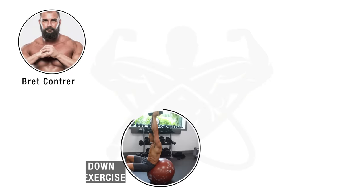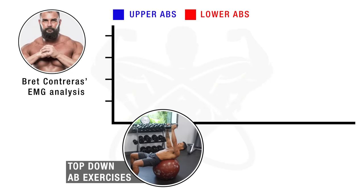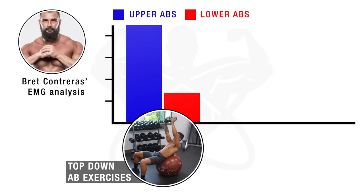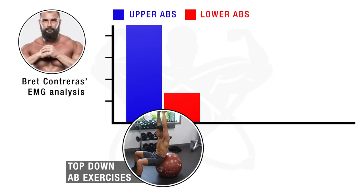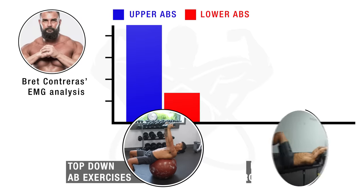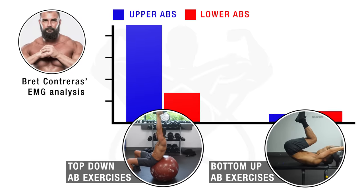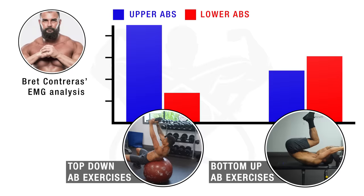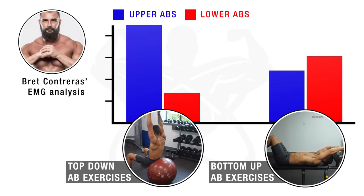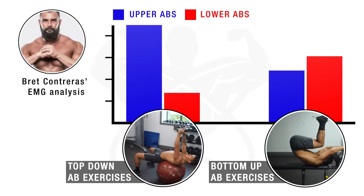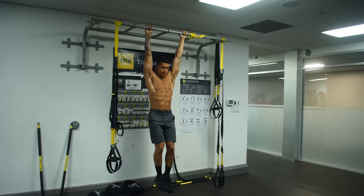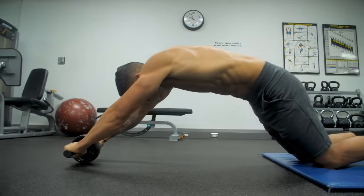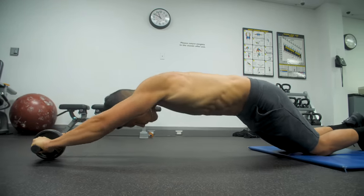More specifically, top-down ab exercises that involve bringing your shoulders down towards your hips, such as crunches, are going to preferentially activate the upper abs more so than the lower abs. Whereas bottom-up ab exercises that involve bringing your hips up towards your shoulders, such as leg raises, are going to instead preferentially activate the lower abs more so than the upper abs. So now that we know the theory behind lower abs exercises, let's take a look at the best ones you can do to start developing this region.